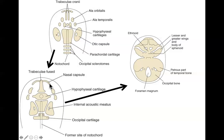For purposes of the quiz, what you need to know is that the floor of the neurocranium forms endochondrally, and the rest of the neurocranium forms intramembranously. The floor of the neurocranium is formed by endochondral bone formation — a cartilaginous model that then ossifies — whereas the rest of the neurocranium is formed by intramembranous bone formation where there is no cartilage. So these two trabeculae cranii fuse together.